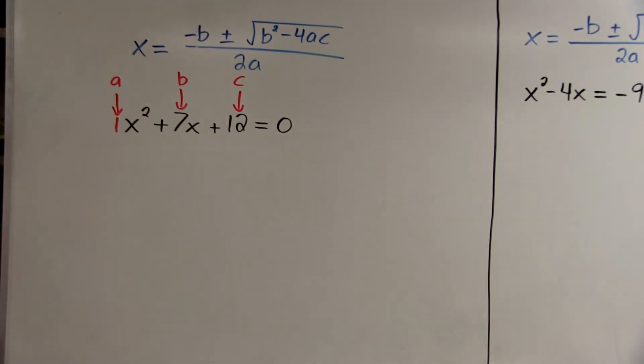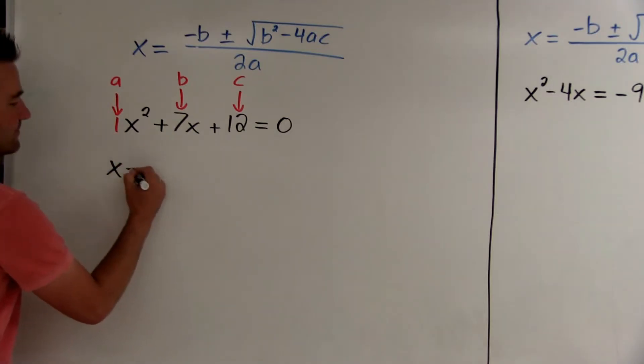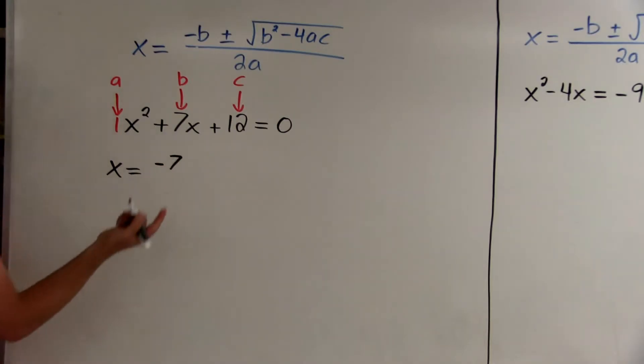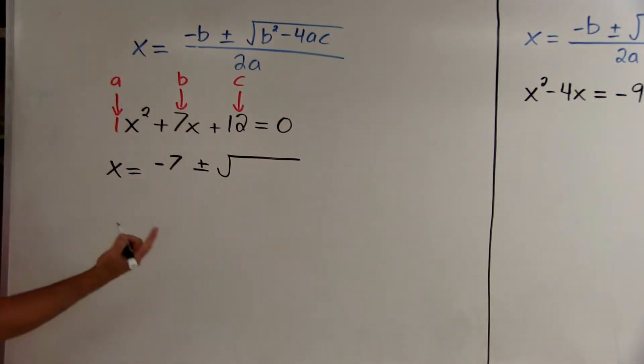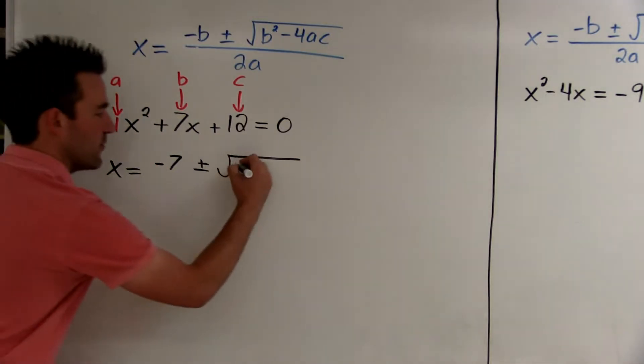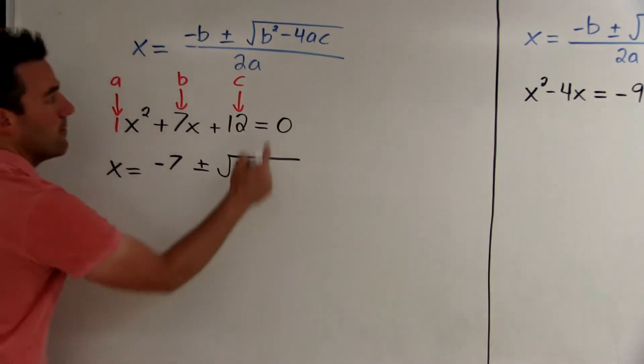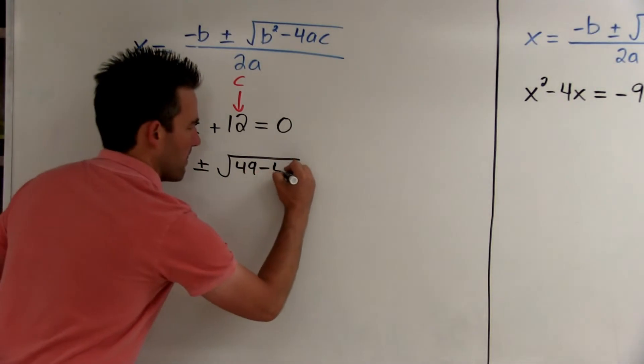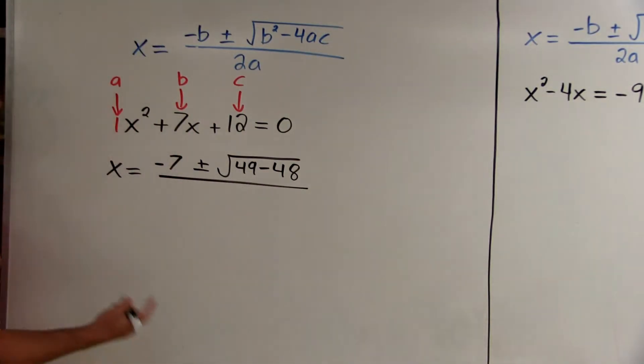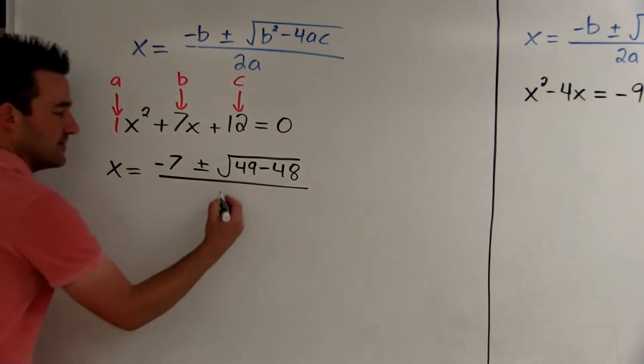Now let's use the formula. The formula says x equals negative b. So negative b would be negative 7, since b is 7. Plus or minus the square root of b squared. b is 7, so 7 squared is 49. Minus 4 times a times c. So 4 times 1 is still 4, times c is 48. All over 2a. And a is 1. So 2 times 1 is 2.